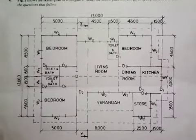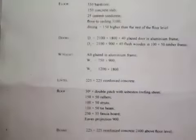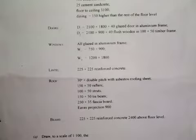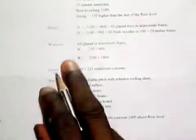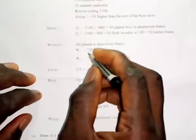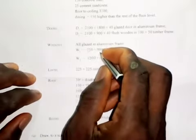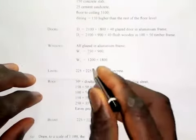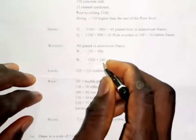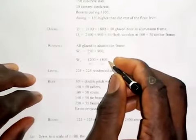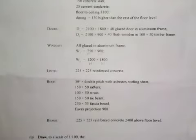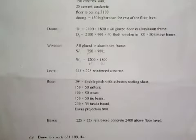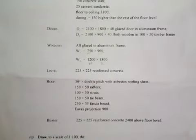Before we begin fixing the windows, there is something in the specifications I need to show you — the dimensions of the windows. All are glazed in aluminium frames. For W1, the height is 750mm and the width is 900mm. For W2, the height is 1200mm and the width is 1800mm. In the plan, we use the width. We only use the height in the front elevation, end elevations, and sectional views.